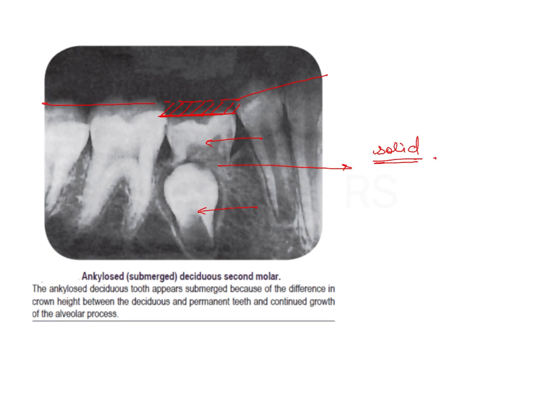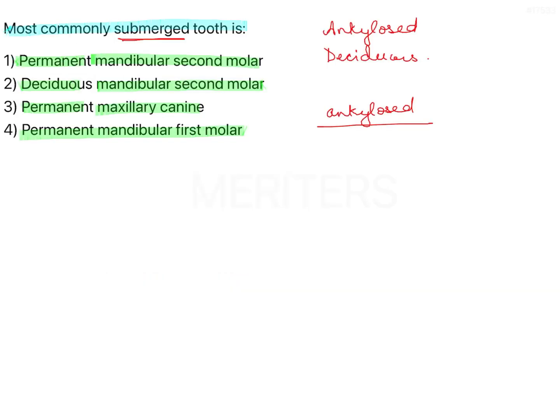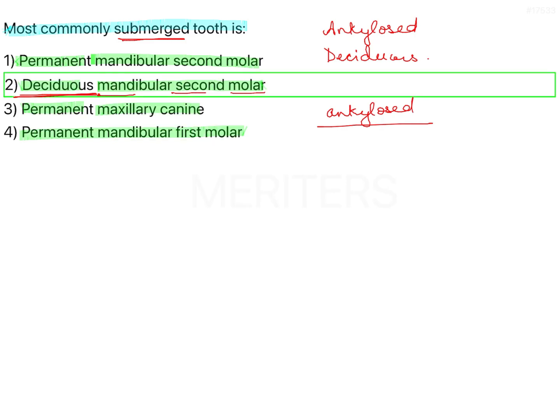The most common tooth that is submerged is the mandibular second molar. Since we are talking about deciduous dentition, the correct answer is option number two — the deciduous mandibular second molar.